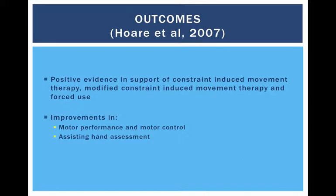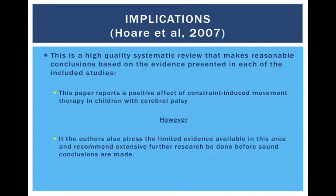The paper found there was positive evidence in support of constraint-induced movement therapy, modified constraint-induced movement therapy, and forced use in the areas of motor performance and control, reaching control, and everyday function. This is a high-quality systematic review that makes reasonable conclusions based on the evidence presented in each of the included studies. It shows the positive effect of constraint-induced movement therapy in children with cerebral palsy. However, it does stress that there is very limited literature available in this area, and that for any true conclusions to be made, more research must be done to ensure these declarations are reliable, relevant, and substantiated.